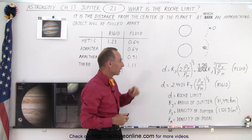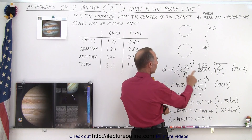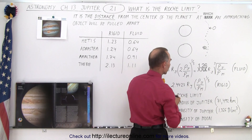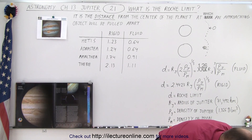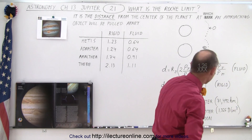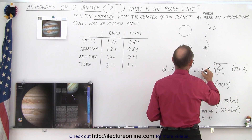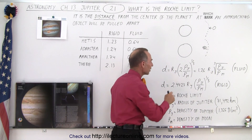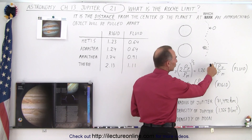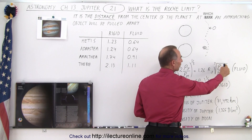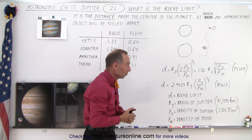The Roche limit can be calculated by taking 1.26 — that's the cube root of 2, which is 1.26 — times the radius of Jupiter, times the cube root of the ratio of the density of the planet, in this case Jupiter, divided by the density of the object, in this case let's assume it's a moon. That gives the fluid Roche limit.